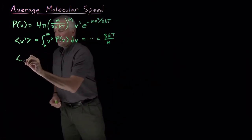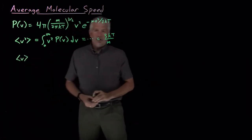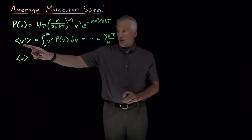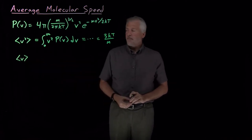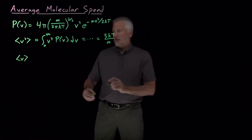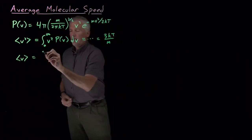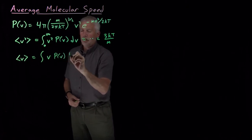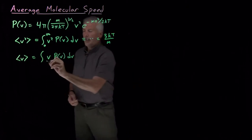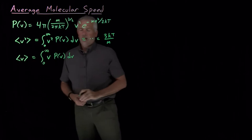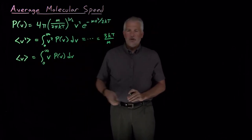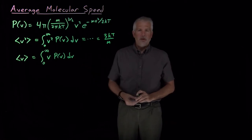The advantage is, in cases where we don't have a shortcut, if we want to know the average speed, not the average squared speed, but the average speed itself, we can now calculate that. So the average speed is going to be sum up all the speeds multiplied by the probability that a molecule has that speed, again integrate from zero to infinity, and that will tell us the average speed of a molecule. And that's something we don't yet know the answer to. So let's go ahead and compute what that is.